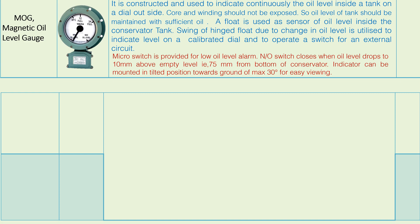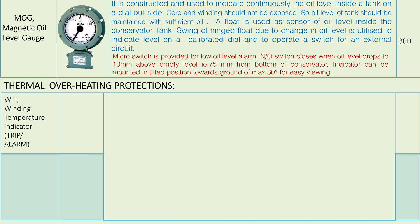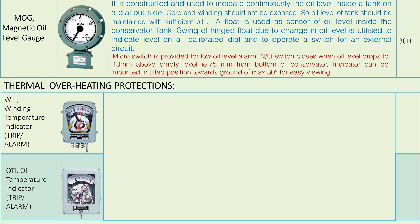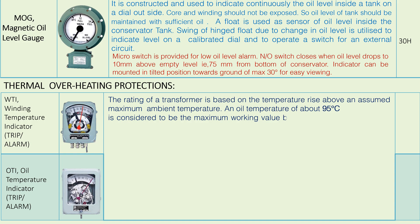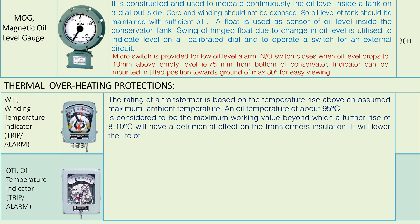Thermal overheating protections — WTI (Winding Temperature Indicator) alarm and trip, OTI (Oil Temperature Indicator). The rating of a transformer is based on the temperature rise above an assumed maximum ambient temperature. Winding temperature and oil temperature of about 95 degrees Centigrade is considered to be the maximum working value, beyond which a further rise of 8 to 10 degrees Centigrade will have a detrimental effect on the transformer insulation and will lower the life of the transformer if sustained.